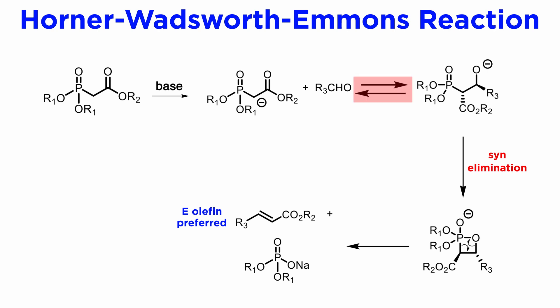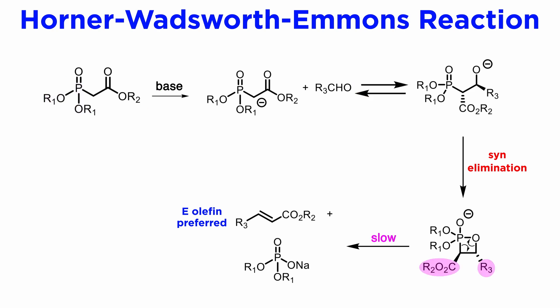While there is sometimes a preference for the kinetic formation of the threo adduct, this depends very much on the base and solvent used, and also the structure of the phosphonate group. The stereoselectivity is best when the first step is reversible and the stereochemistry is decided by the slow step of the reaction — the fragmentation of the cyclic intermediate — in which the two bulky groups prefer to be anti to each other.